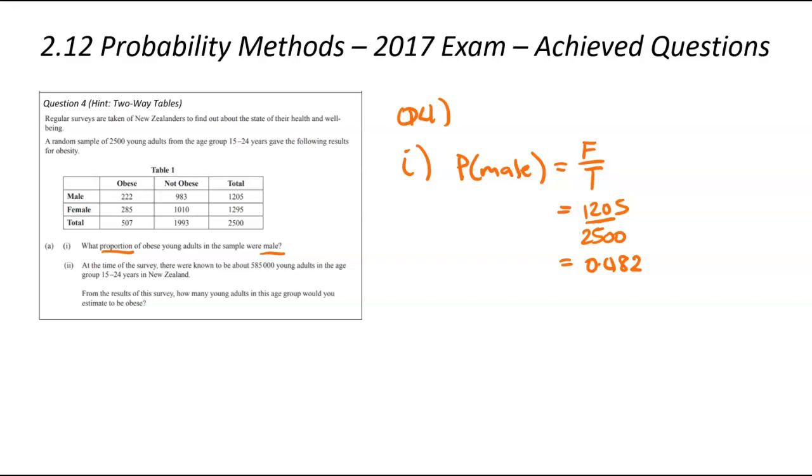That question was one of the gimmies, pretty easy one. Slightly harder, it's going to be question two. At the time of the survey, there were about 585,000 young adults in the age group we're looking at. From this study, how many adults of the age group would you estimate to be obese? The first thing, estimate, that's kind of how many would you expect? That's suggesting an expected value type of approach, and we're looking at the obese people only.